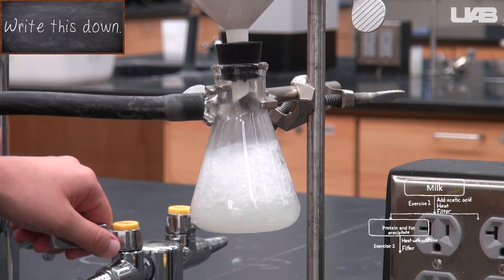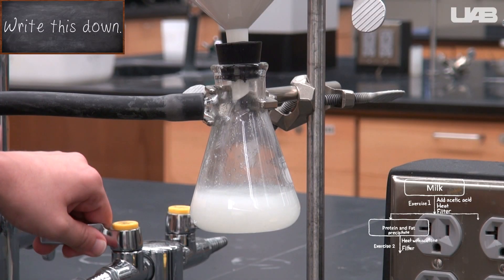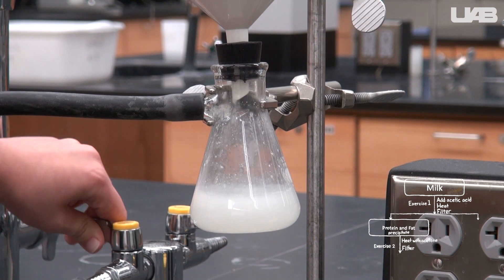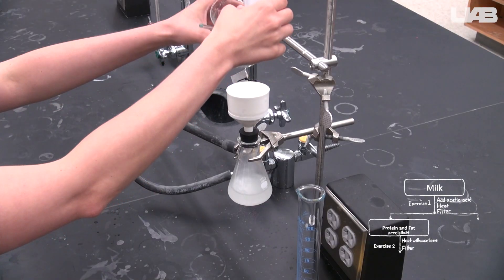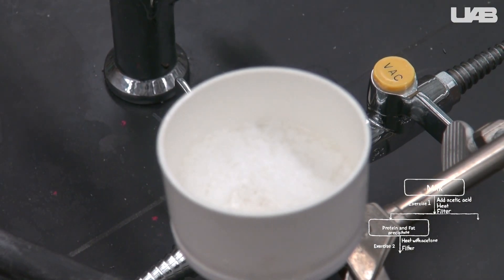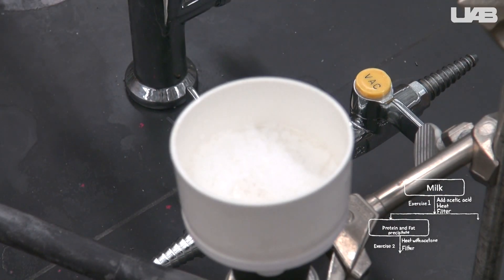Make sure that you do not allow the filtrate to boil. It can boil even though it's not hot. The solvent gases can damage the house vacuum if you let them go through the tubing. After you've completed your washes, allow air to keep passing through until the protein is dry and can be easily removed. Turn the vacuum off.